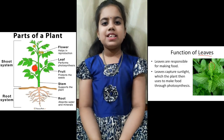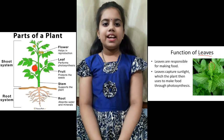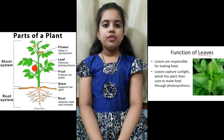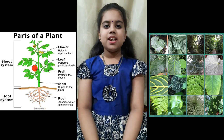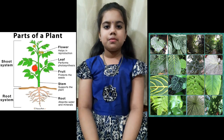Next one is leaves. Leaves collect sunlight and make food for the plant. Every plant has a different kind of leaf.